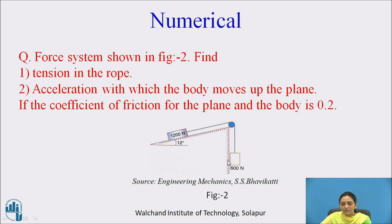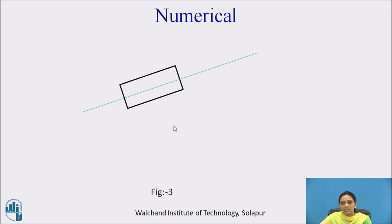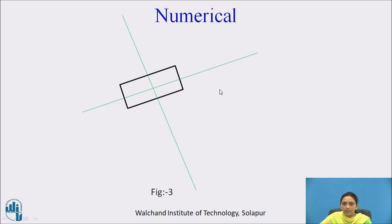The coefficient of friction is not given for the vertical wall and the 800 Newton block, so it is not in contact with the vertical wall. We solve step by step. First, draw the free body diagram of the 1200 Newton block on the inclined plane. Keep it as it is and change the axis: set the x-axis parallel to the plane and the y-axis perpendicular to the plane. This makes analysis of the inclined plane case straightforward.